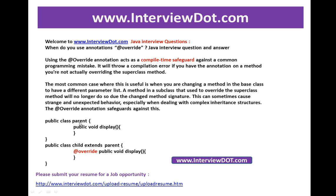For example, I have a parent class (superclass) and a subclass called Child which extends the Parent class. I have a method 'display' in both, and in the Child class I am marking it as @Override, meaning I am giving my own implementation in this child class. So why do we need this annotation at all, if we already have a display method in the child? It acts as a compile-time safeguard.